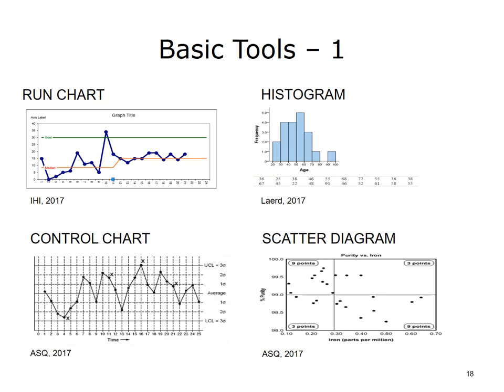A control chart consists of chronological data along with upper and lower control limits that define the limits of common cause variation. A control chart is used to monitor and analyze variation from a process, to determine if that process is stable and predictable from common cause variation, or unstable and showing signals of special cause variation.